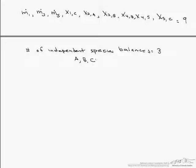Instead we could do an overall balance and 2 of the species balances. But we cannot do all 4 overall A, B, and C because they are not independent.